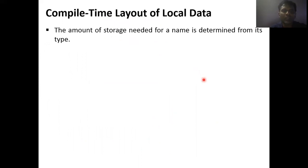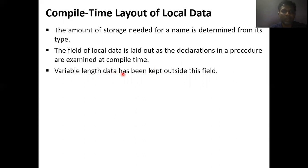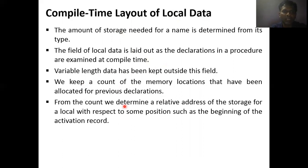The compile time layout of data: the amount of storage needed for all variables declared in the program is determined based on their type — floating point, integer, character, etc. The field of local data is laid out based on declarations in a procedure at compile time. Variable length data has been kept outside this field because we cannot determine that memory storage at compile time. We keep a count of memory allocation from previous declarations to determine the relative order of storage for local data with respect to the beginning of the activation record.